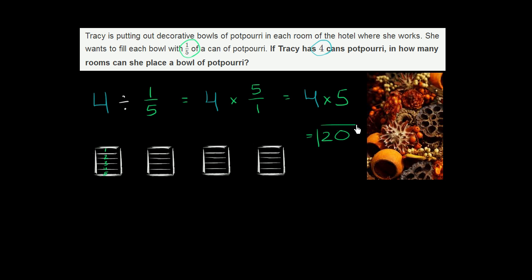She can fill 20 cans, or I should say, with her four cans, she can fill 20 bowls of potpourri. Now, just as a review here, we've already seen that dividing by a number is equal to multiplying by its reciprocal, and we see that right over here.